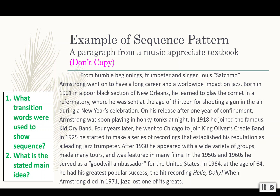'In the 1950s and 60s, he served as a goodwill ambassador for the United States. In 1964, at the age of 64, he had his greatest popular success — the hit recording Hello Dolly. When Armstrong died in 1971, jazz lost one of its greats.' Our topic is Louis Armstrong. The stated main idea is the first sentence — that he went on to have a long career and a worldwide impact on jazz. To show that, we go through his history chronologically, starting where he came from in 1901, then moving to 1918, 1925, 1930, the 50s and 60s, 1964, and ending with his death in 1971. This is where a sequence pattern matters, because the order matters — you talk about someone's life in the order that they lived it.